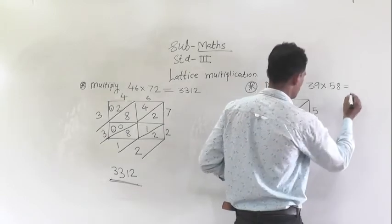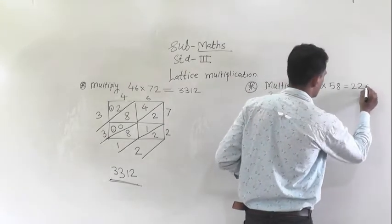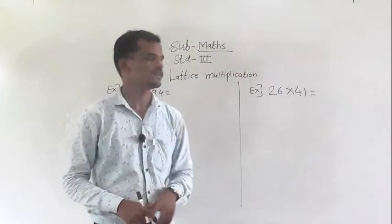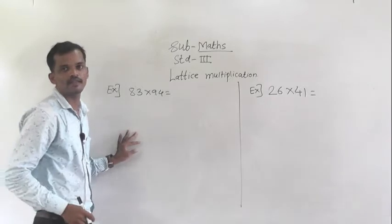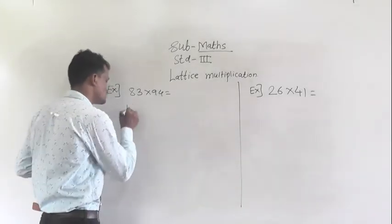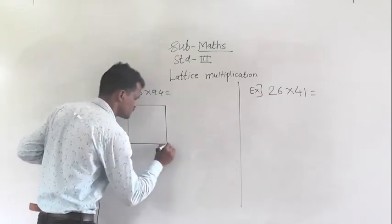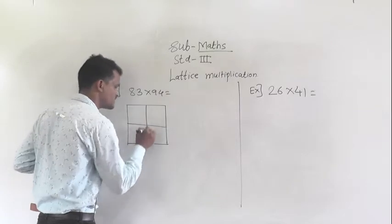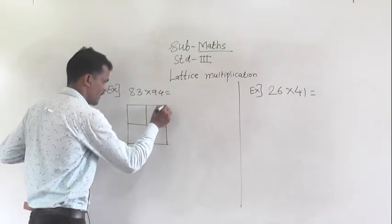This is a very simple way to multiply big numbers by big numbers. Next example: 83 multiply by 94. We will solve this example by lattice multiplication. First draw one grid like this, divide it into 4 parts, then make partitions.